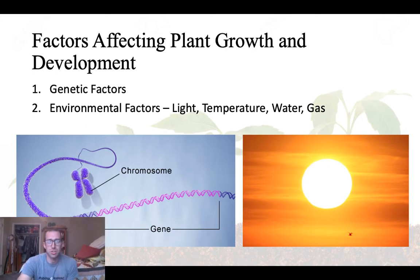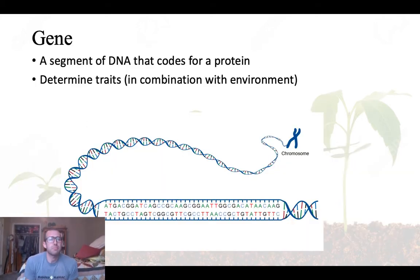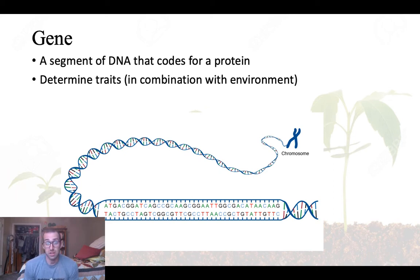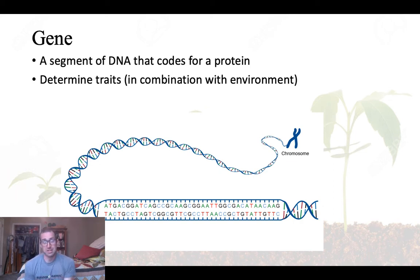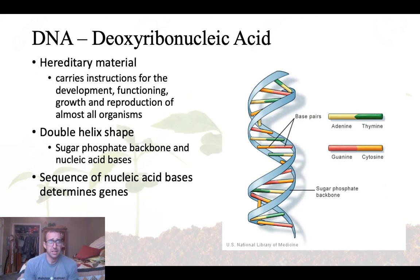A gene is a segment of DNA that codes for a protein. Ultimately, genes determine the traits of an organism — in combination with the environment. DNA, or deoxyribonucleic acid, is the hereditary material that carries the instructions for the development, functioning, and growth of organisms.